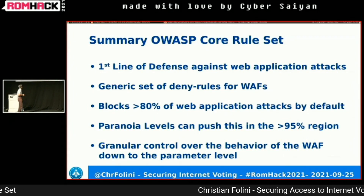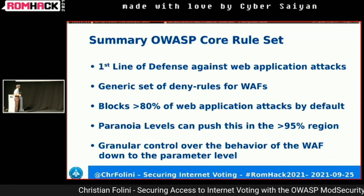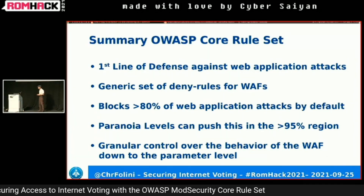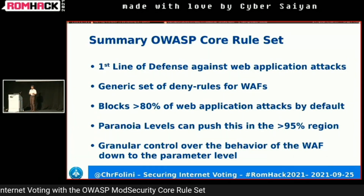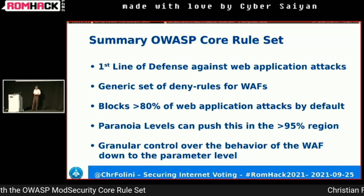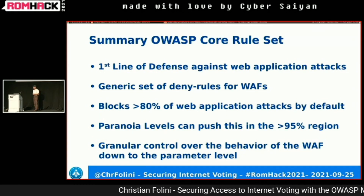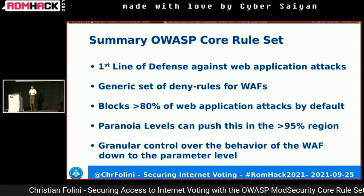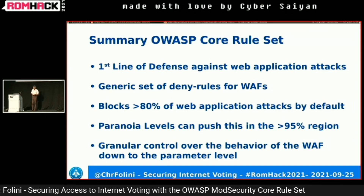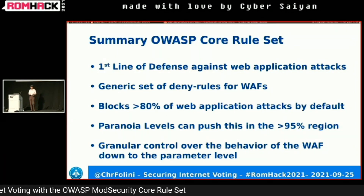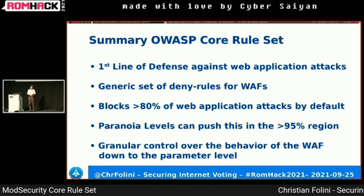To summarize: the OWASP Core Rule Set is the first line of defense against web application attacks. It's a generic set of deny rules — it works everywhere. It blocks at least 80% of application attacks by default, covering the OWASP Top 10. Paranoia levels can push this into the 95%+ region, and you retain granular control over your entire traffic down to the byte level.